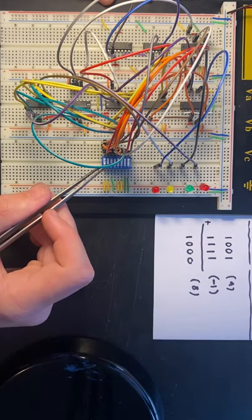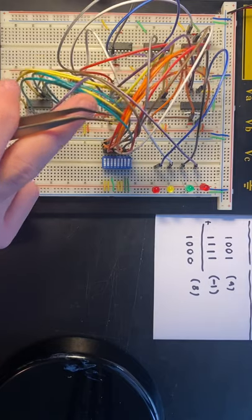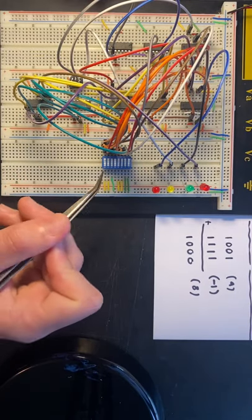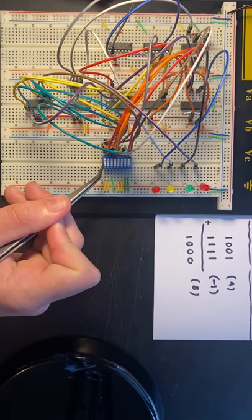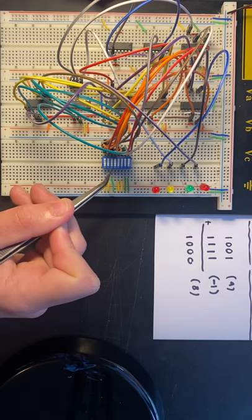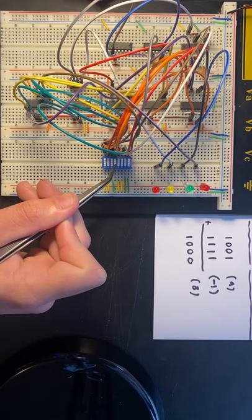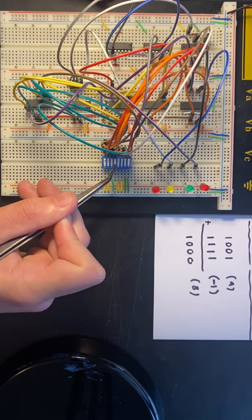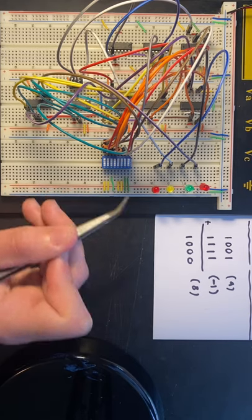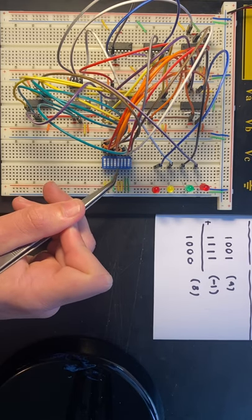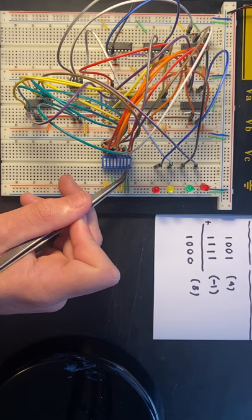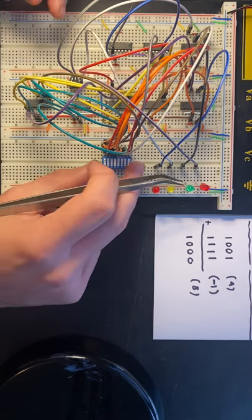Here on the switches, as you can see, let me take this wire a little bit to the side. Starting from this switch here all the way to switch number five is your first four digits of the first number, and subsequently four through one is your other four digits for the second number.